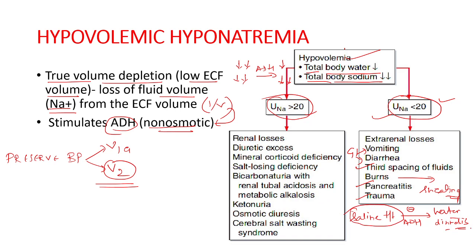When urine sodium is less than 20 mmol in the absence of hypervolemia, this confirms hypovolemic hyponatremia with an extra-renal cause. When urine sodium is more than 20 mmol, these are the renal causes of hypovolemic hyponatremia, where there is inappropriate loss of sodium and chloride in urine leading to volume depletion and increased circulating AVP.